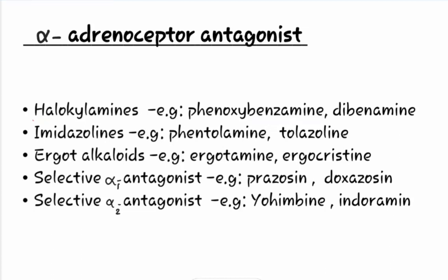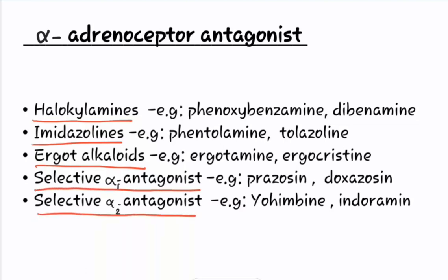The five subtypes of alpha adrenoreceptor antagonists are: first, haloalkyl amines; second, imidazolins; third, ergot alkaloids; fourth, selective alpha 1 antagonist; and fifth, selective alpha 2 antagonist.